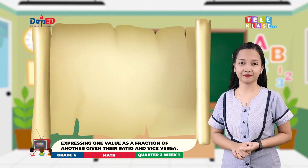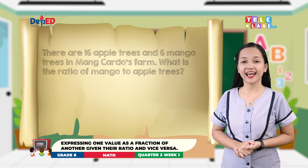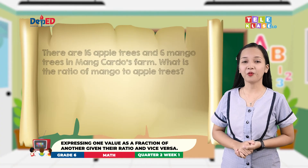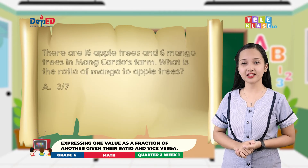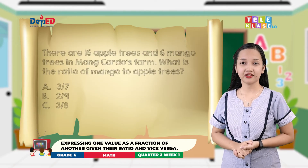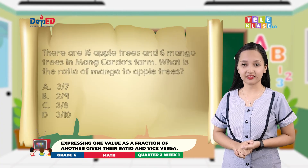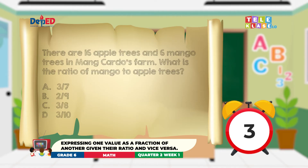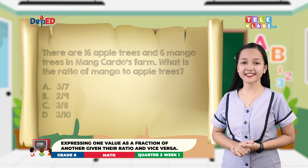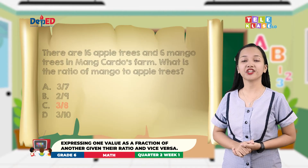Box three question: There are sixteen apple trees and six mango trees in Mount Cardo's farm. What is the ratio of mango to apple trees? A, three-sevenths; B, two-ninths; C, three-eighths; D, three-tenths. The answer is six over sixteen, or three-eighths.